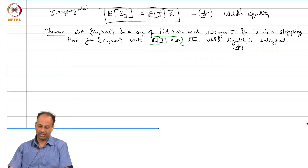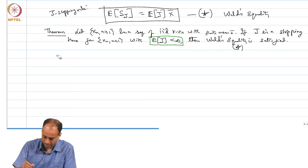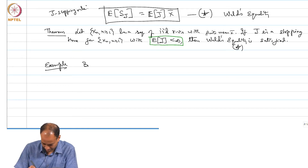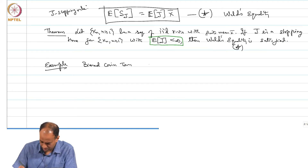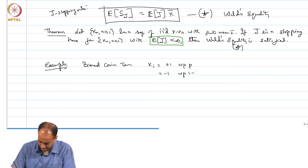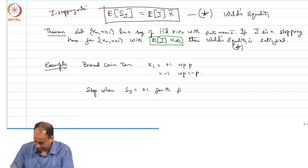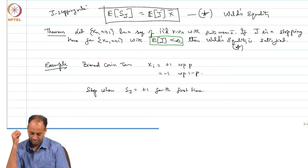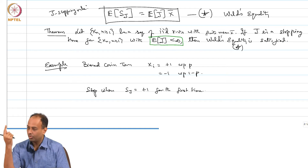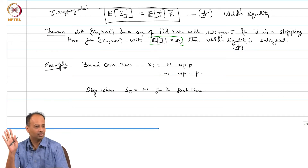Before we prove Wald's equality, let me give an example: a biased coin tossing or biased random walk. x_i equals plus 1 with probability p and minus 1 with probability 1 minus p. The stopping rule is: stop when S_j equals plus 1 for the first time. So this is a gambler who wins 1 rupee with probability p or loses 1 rupee with probability 1 minus p, and he stops the first time he is ahead by 1 rupee.